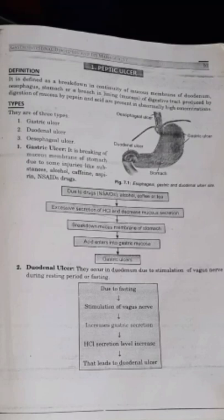Good morning. In this lecture I am going to start a new unit — peptic ulcer, which is one of the gastrointestinal disorders related to the digestive system. Peptic ulcer occurs mainly in the stomach. Let's start with the definition.